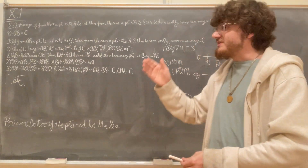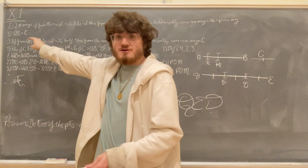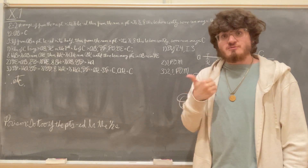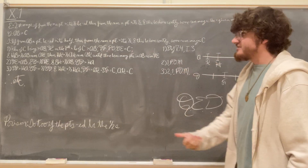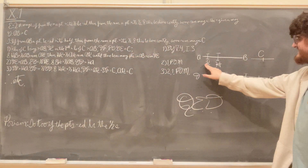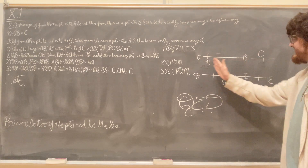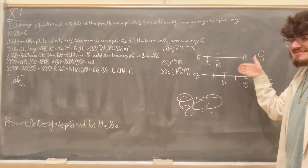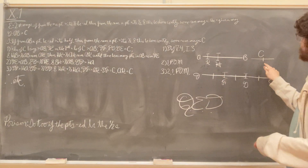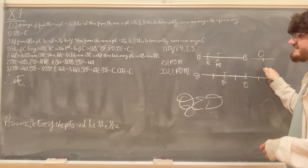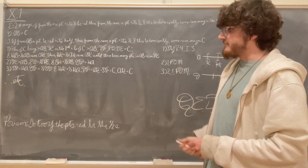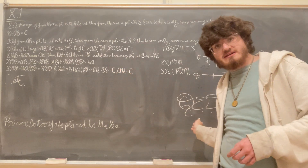We set out to prove that if we cut parts off of the greater magnitude which are greater than its half, and do this enough times, we'll eventually reach some magnitude which is less than the lesser magnitude C. And we've just done that — we've reached AK, which has been cut from AB by cutting off parts greater than its half, and AK has been shown to be less than C. So AK being that magnitude which we set out to prove exists, we are therefore done with the proposition. QED.